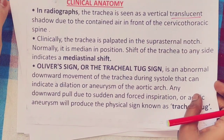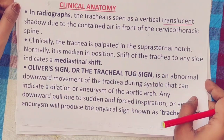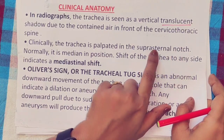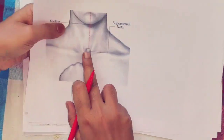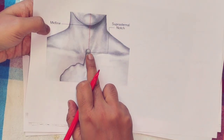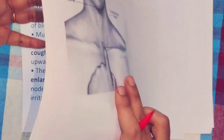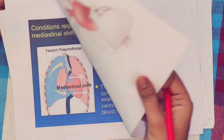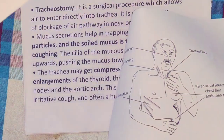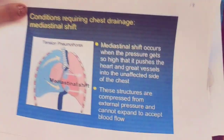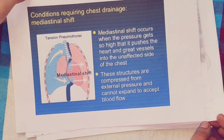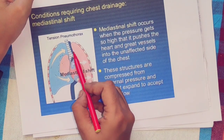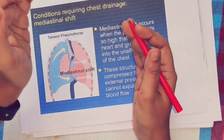The trachea can be palpated at the suprasternal notch. By feeling the suprasternal notch, we can detect mediastinal shift — that is, whether the trachea has deviated from the midline.